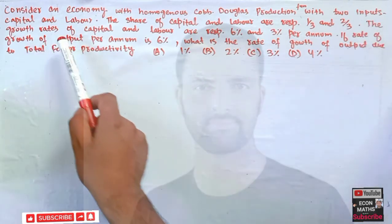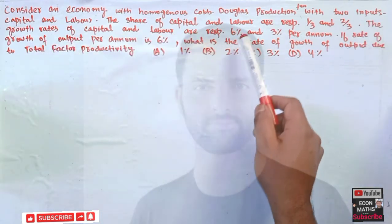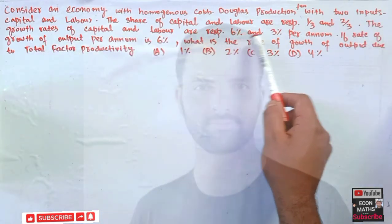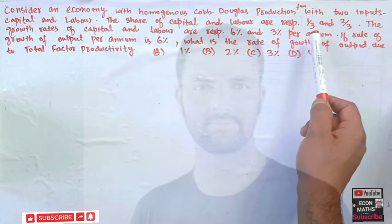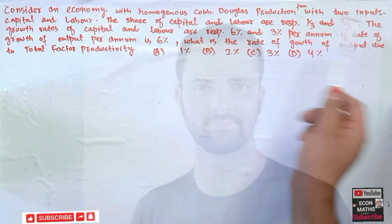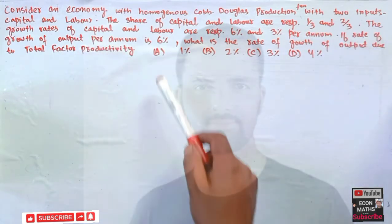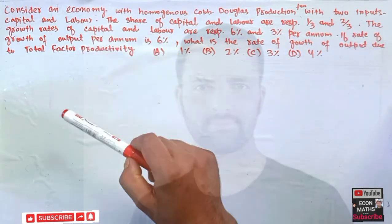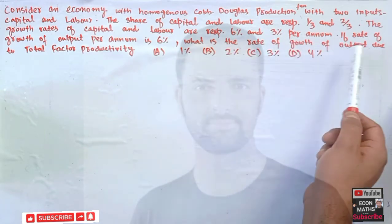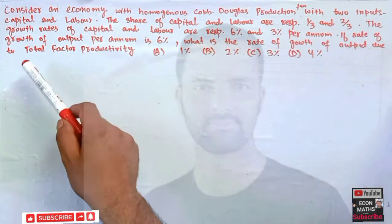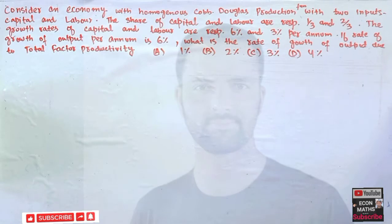The growth rates of capital and labor are respectively 6% and 3% per annum. If the rate of growth of output per annum is also given as 6%, what is the rate of growth of output due to total factor productivity?